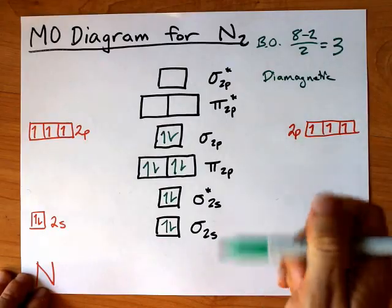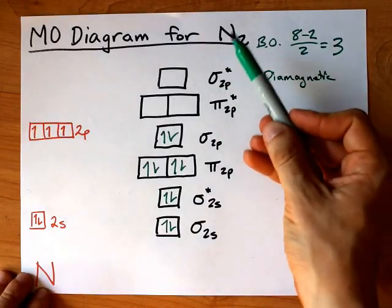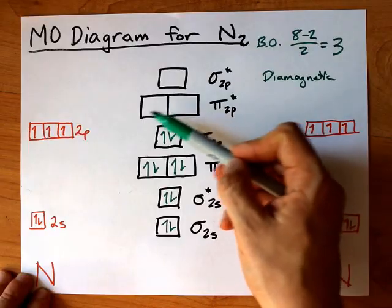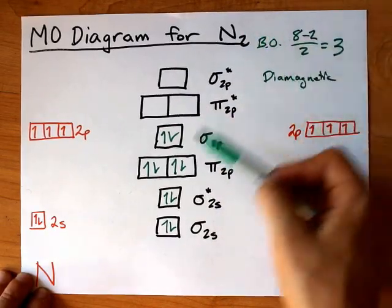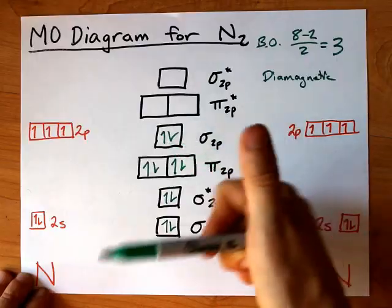And finally, I'd like to point out that if we added electrons due to there being a minus charge here, we would have had to put some of them here. And if we were taking away electrons due to a positive charge, these electrons would be the first to go.